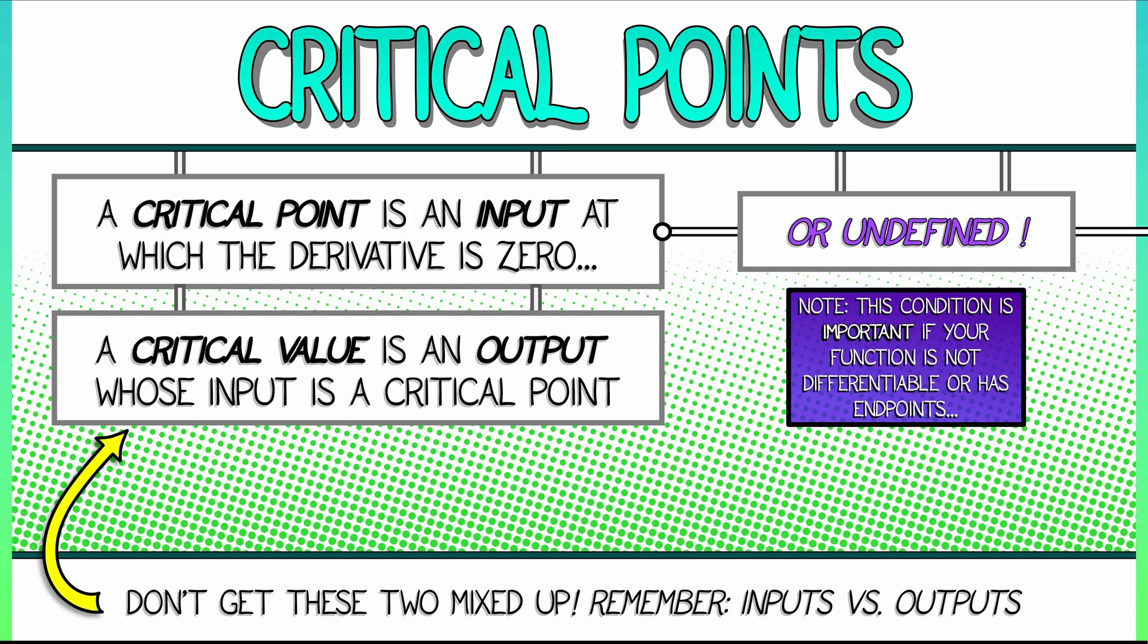Don't get those two confused. Critical point: input. Critical value: output. Now, why is this a thing? Why is this an important definition?